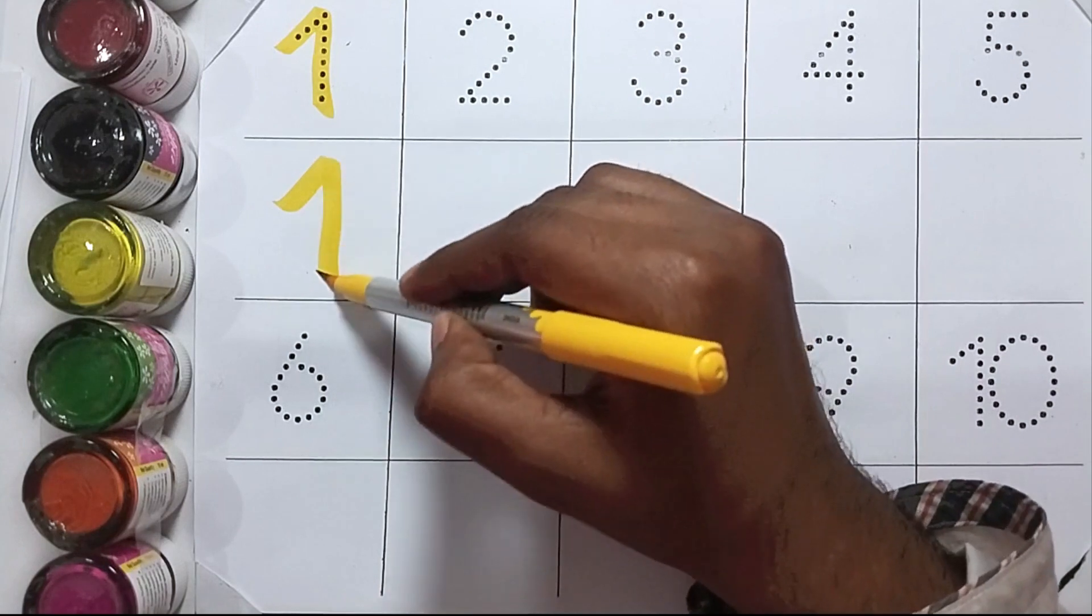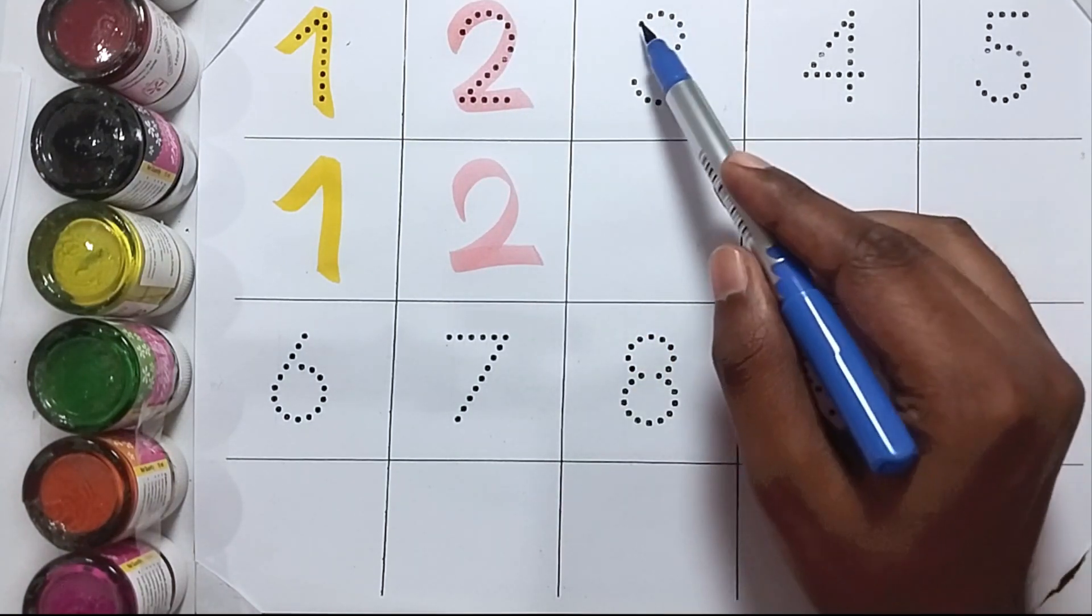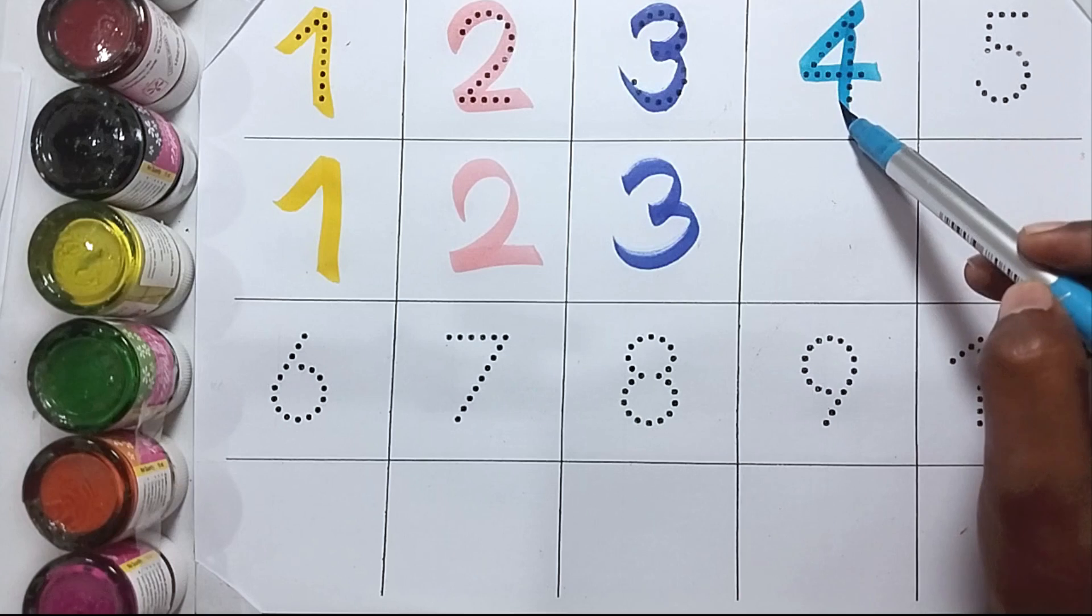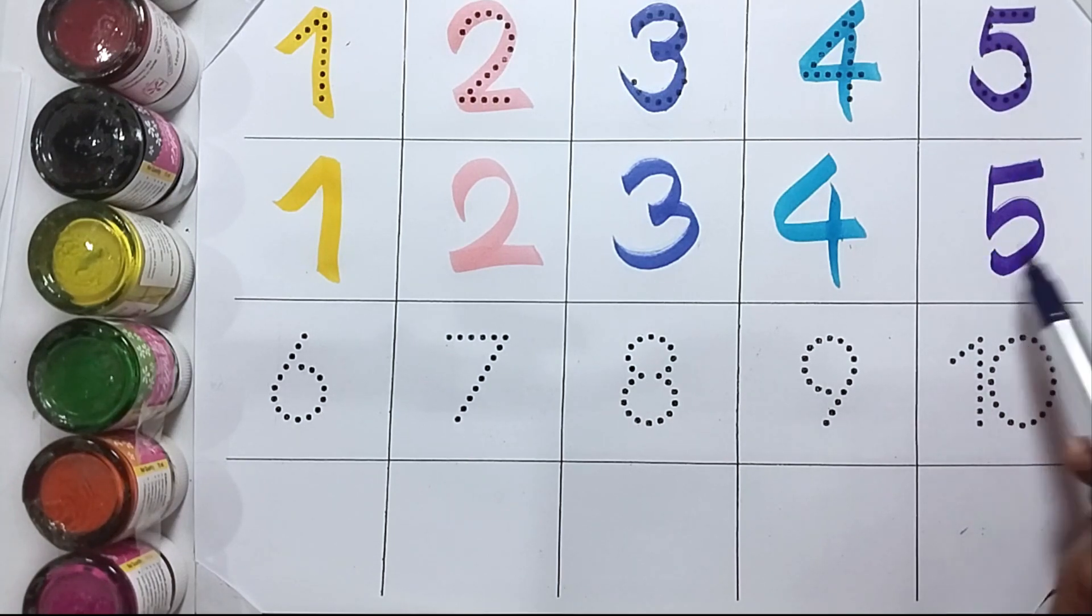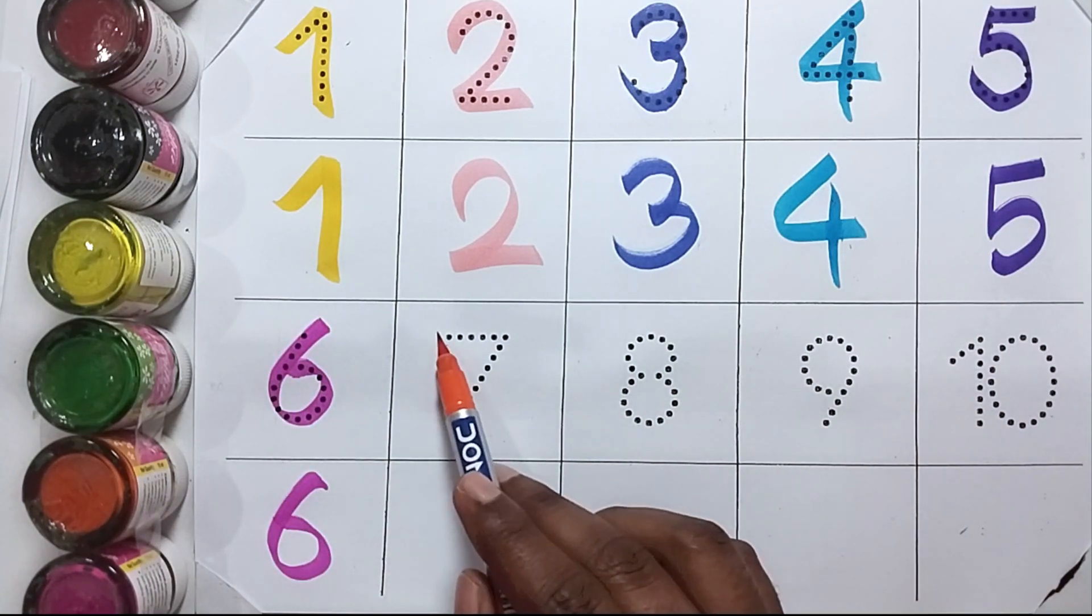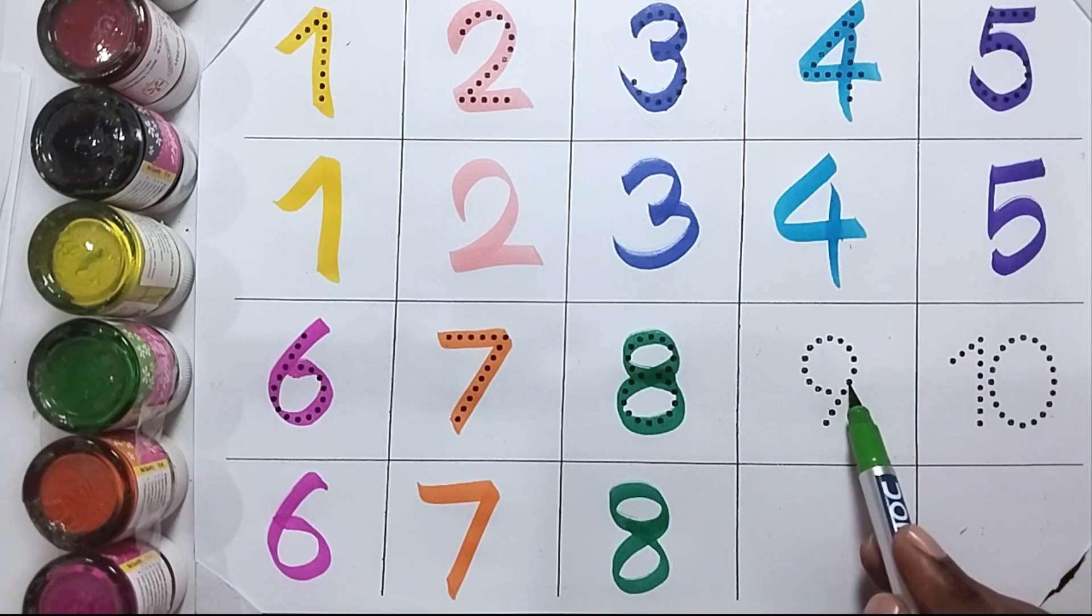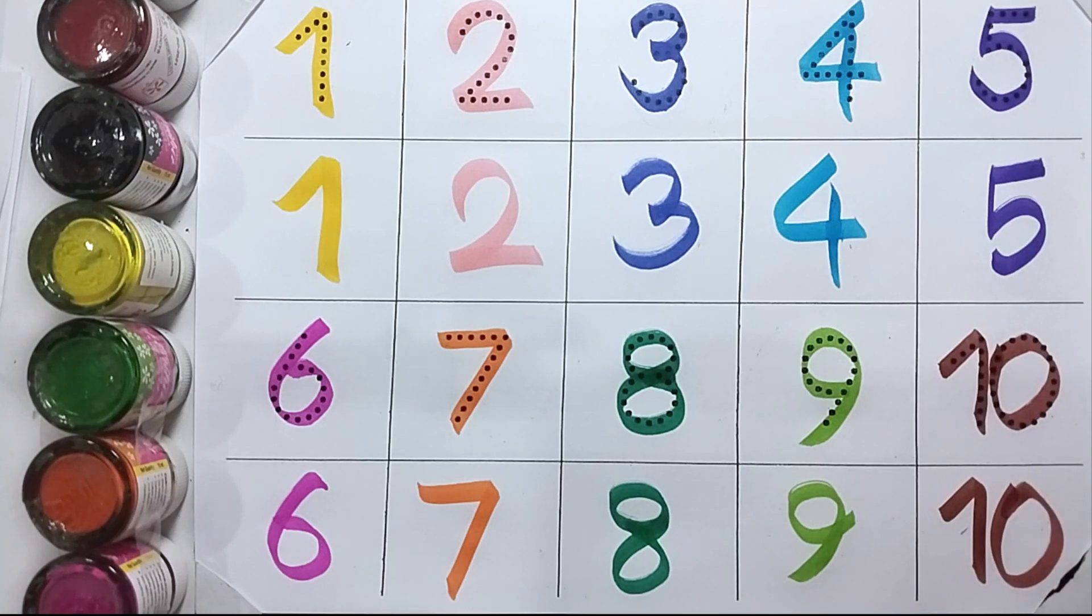1 O-N-E 1, 2 T-W-O 2, 3 T-H-R-E-E 3, 4 F-O-U-R 4, 5 F-I-V-E 5, 6 S-I-X 6, 7 S-E-V-E-N 7, 8 E-I-G-H-T 8, 9 N-I-N-E 9, 10 T-E-N 10.